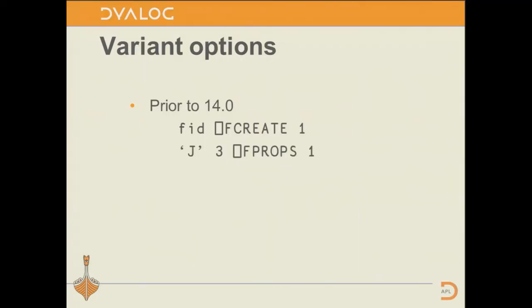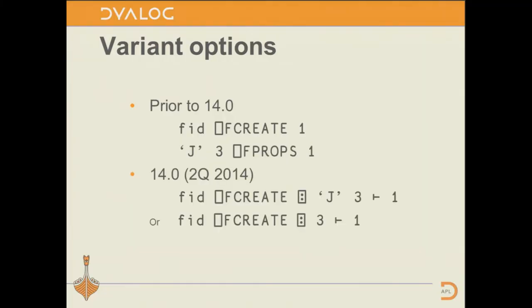The first thing we've got in version 14 is variant support added to a fair number of the component file functions. Variant has been used on quad R and quad S system operators — it's a way of giving options, defining another version of a function with slightly different default properties. For example, quad F create ordinarily creates a file with journaling and checksumming at level 1. With variant, I can create a variant that gives a file with a default journaling level 3. In version 14, you'll be able to do it in one step.